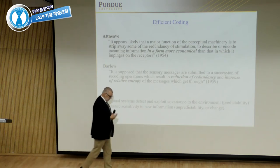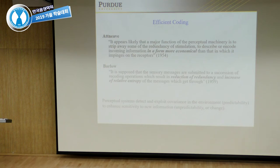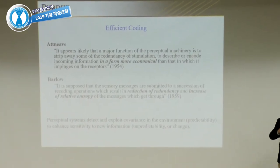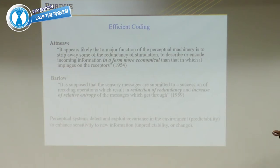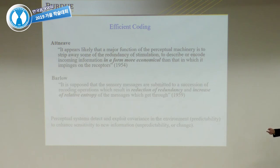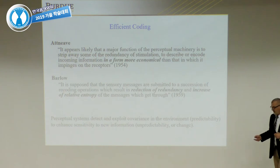When we think about things in terms of efficient coding, we think about any sensory neural system as a succession of operations to remove redundancy from the signal until it has a form more economical than what came to our receptors—in other words, pulling out this predictability. Horace Barlow: sensory messages are submitted to a succession of recoding operations which result in a reduction of redundancy, and reduction of redundancy is to increase the relative entropy, to make more obvious the unpredictable. Perceptual systems detect and exploit covariance of the environment to enhance sensitivity to new information, unpredictability, or change.